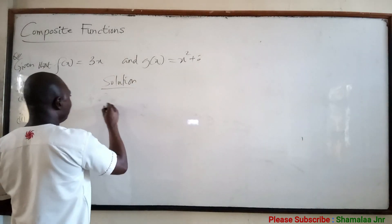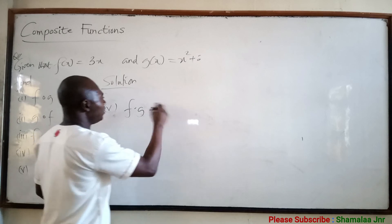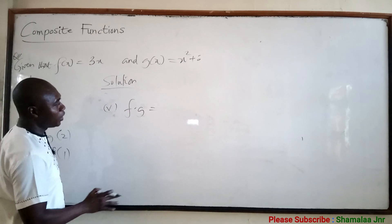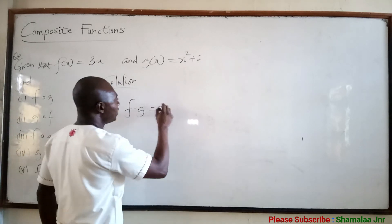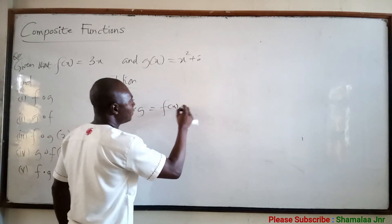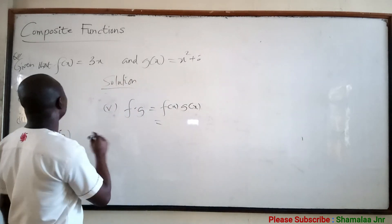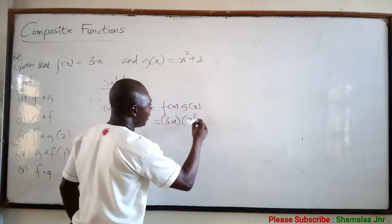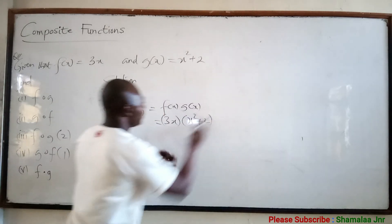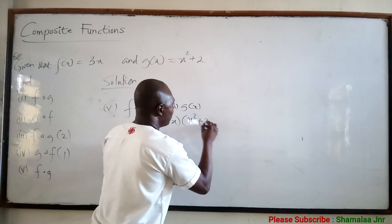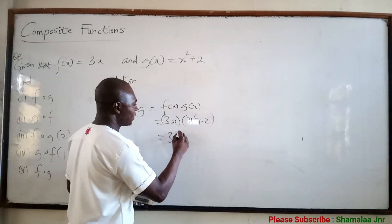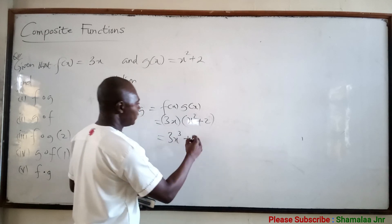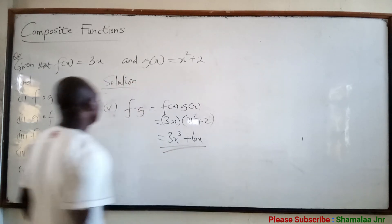The last one: f dot g — this means the f function times the g function. This is seen as f(x) times g(x). f(x) is 3x and g(x) is x squared plus 2. So multiplying: 3x times (x squared plus 2) gives 3x cubed plus 6x.